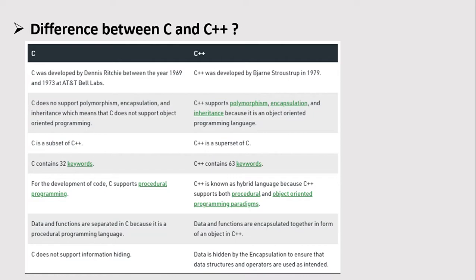C++ is known as a hybrid language because C++ supports both procedural and object-oriented programming paradigms. Data and functions are separated in C because it is a procedural programming language. Data and functions are encapsulated together in the form of an object in C++. C does not support information hiding, whereas data is hidden by encapsulation in C++ to ensure that data structures and operators are used as intended.